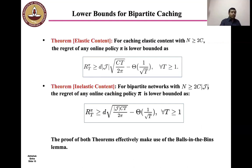Next, we come to the regret lower bounds that extensively make use of our previous balls into bins framework. The lower bounds are also divided into two different categories for elastic content and for inelastic content. The first theorem states that for caching elastic content with N ≥ 2C, the regret of any online policy π is lower bounded by d|J|√(CT/2π) minus constant divided by √T for all T ≥ 1. The proof of both theorems effectively make use of the balls in the bins lemma and is given in the paper.